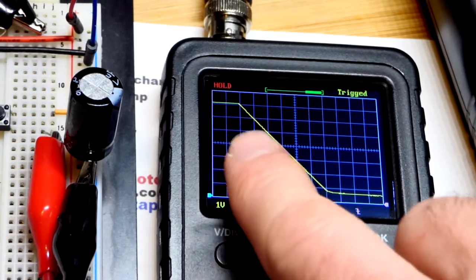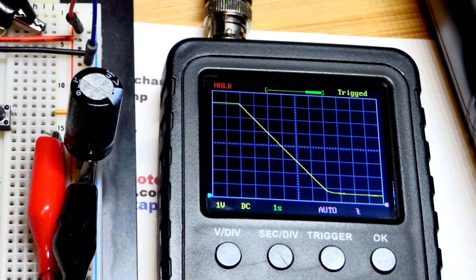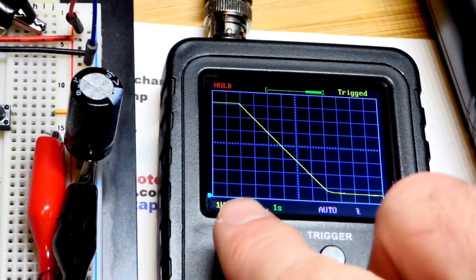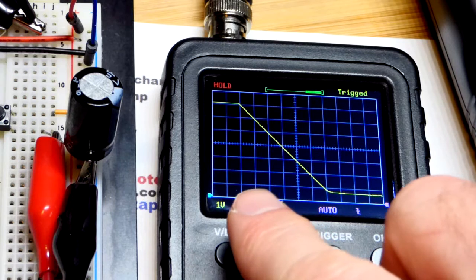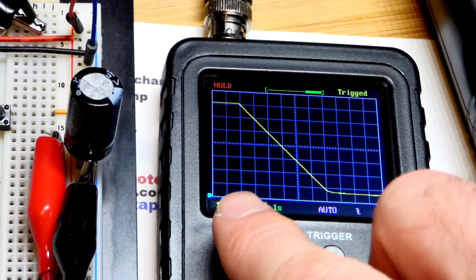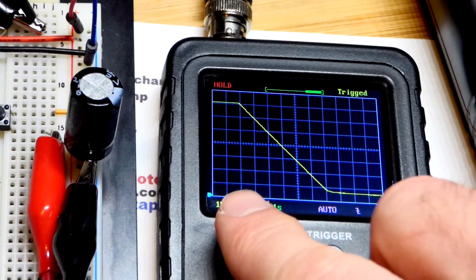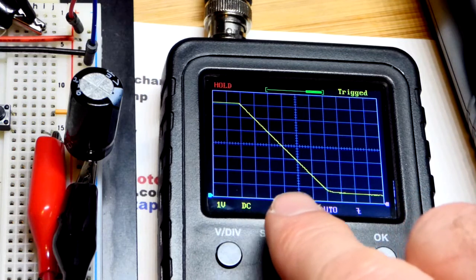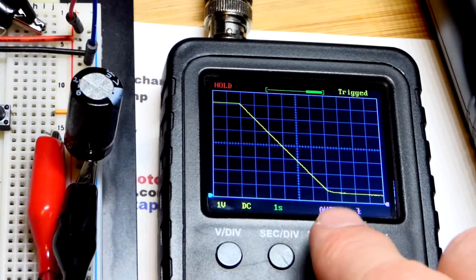There you can see it slowly went down in a ramp pretty steadily there. And it should be about probably a little more than six seconds. So we got that line as the first one. One, two, three, four, five, six, and then a little bit more there.